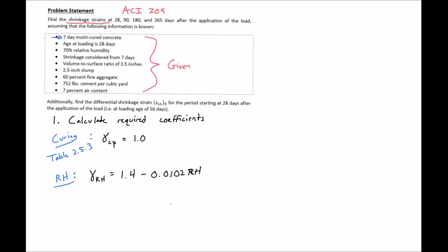Next we have our relative humidity factor. Our relative humidity is 70%, so we'll plug in our 70% and we'll find that our relative humidity factor is equal to 0.686.